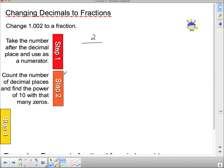So, I need a power of 10 with that many zeros. By power of 10, I mean 10, 100, 1,000, 10,000, etc., things with zeros on the end. So, I need a 1 followed by 1, 2, 3 zeros. 1, 2, 3 zeros, which is the thousands.